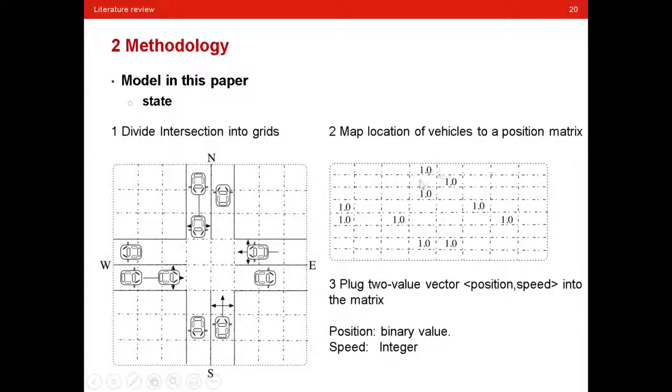As you can see, when there is one value in the matrix, it means that there is a vehicle in this position. Then, finally, to give a detailed description of traffic state in the intersection, the author plugs two value vectors into the matrix. The vector consists of position and speed value.